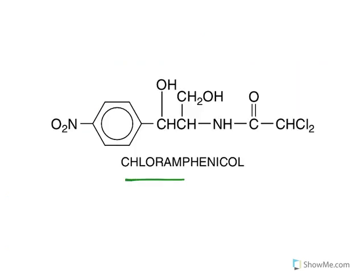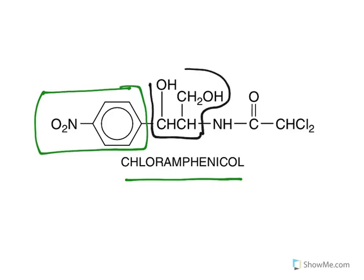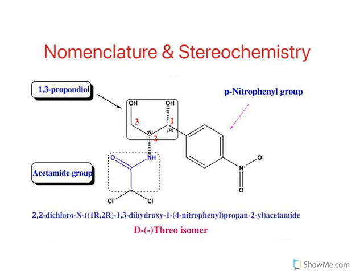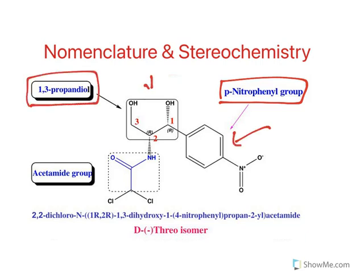This is the structure of chloramphenicol. To master it, you need to understand certain key groups: it has a para-nitrophenyl group, a propyl group with two hydroxy substitutions, and an acetamide substitution with dichloro. These are the three important groups. The para-nitrophenyl group, the 1,3-propanediol group with three carbons, and an acetamide group substituted with two chlorines.